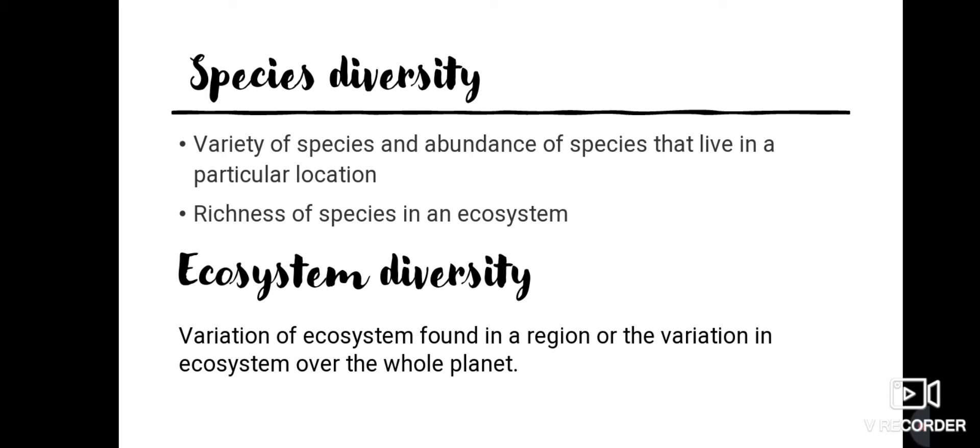Ecosystem diversity means the variation of ecosystems found in a region or over the whole planet. There are different types of ecosystems: pond ecosystem, forest ecosystem, terrestrial ecosystem, aquatic ecosystem, and other ethereal ecosystems. The organisms found in each of these ecosystems will be different.